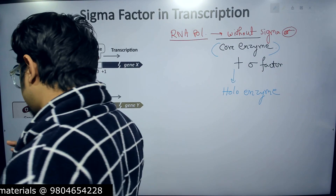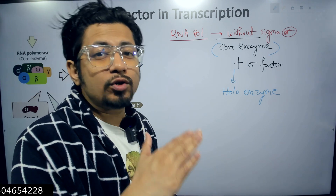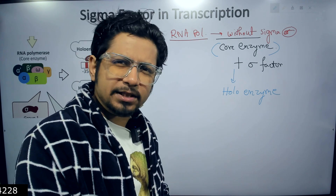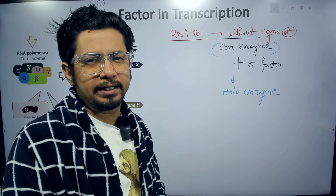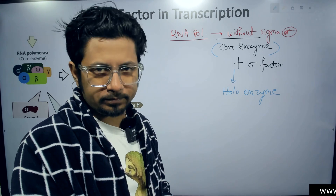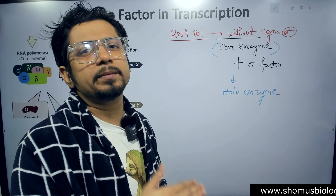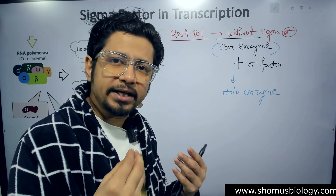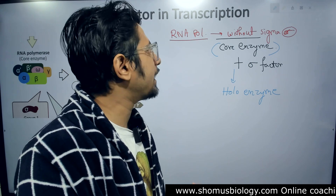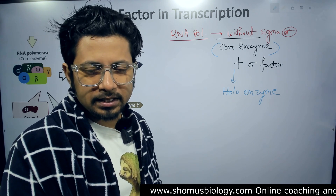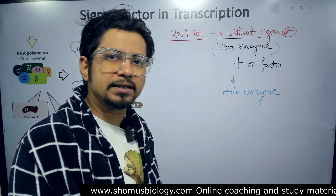For example, the core enzyme of RNA polymerase in prokaryotes is capable of binding to the DNA, but it is not capable of proper interaction with the DNA — meaning it cannot particularly figure out the promoter region. Without figuring out the promoter region, this RNA polymerase cannot initiate transcription. For initiating transcription, the promoter region needs to be recognized by the RNA polymerase, and for that purpose they require the sigma factor.